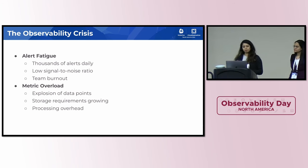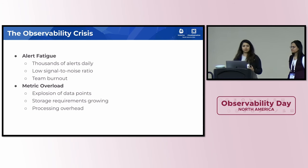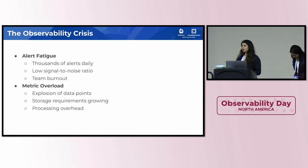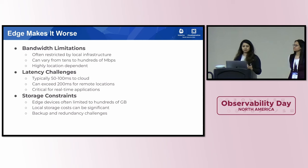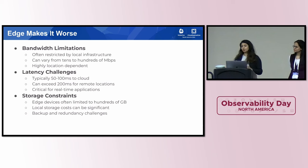Next up, we have metric overload. Every component, every service, every container is generating metrics today. We have infrastructure metrics, application metrics, and business metrics — all seem very valuable, but it's really overwhelming. And when we move compute to the edge, it has its own challenges. Edge comes with constraints: bandwidth limitations often restricted to local infrastructure, bandwidth that is highly location dependent, and latency challenges, especially for applications that need real-time processing.